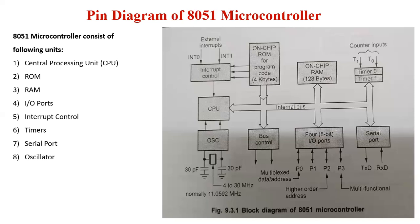There are 128 addressable bits in the internal RAM. The next unit is the input/output port. The 8051 microcontroller has four 8-bit I/O ports: P0, P1, P2, and P3. All ports can be used as general purpose ports. In the presence of external memory, Port 0 functions as a multiplexed address and data bus, and Port 2 functions as a higher-order byte address bus. All 4 pins of Port 3 are multifunctional, so each pin of Port 3 can be programmed as I/O or as one of its alternate functions.